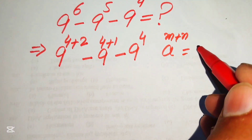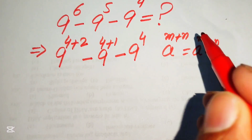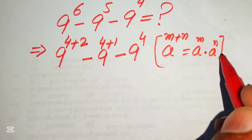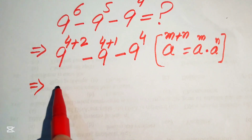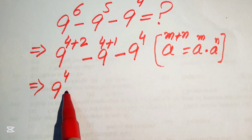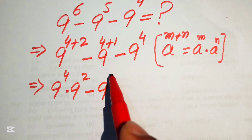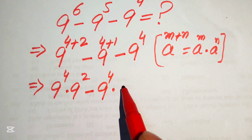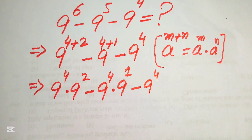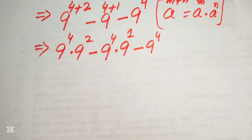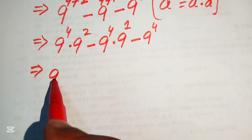Now we apply the exponent law: a to the power of m plus n equals a to the power of m multiplied by a to the power of n. According to this law, we break the exponents and rewrite the expression as 9 to the power of 4 multiplied by 9 squared, minus 9 to the power of 4 multiplied by 9 to the power of 1, minus 9 to the power of 4.